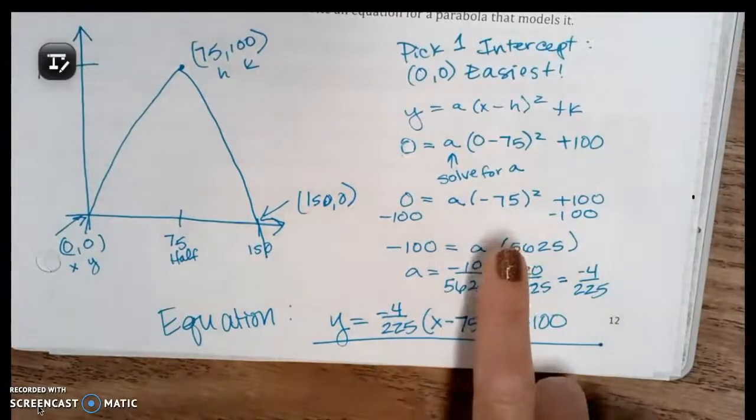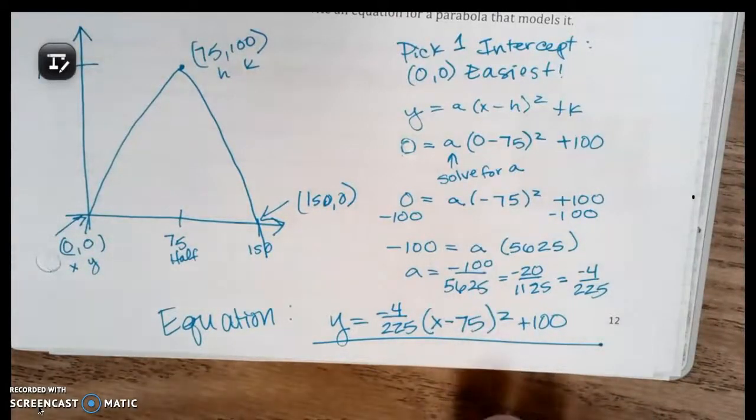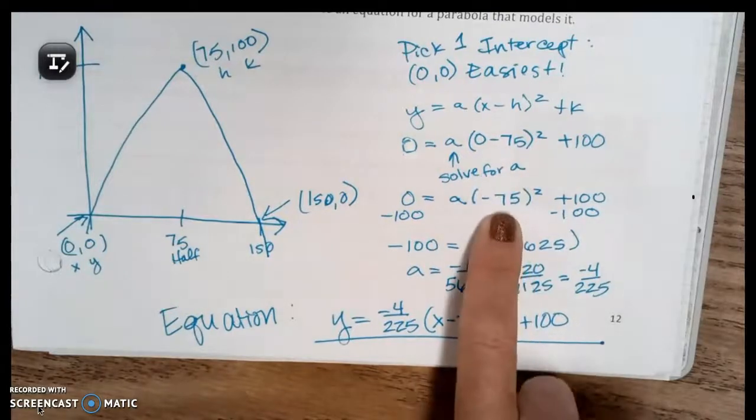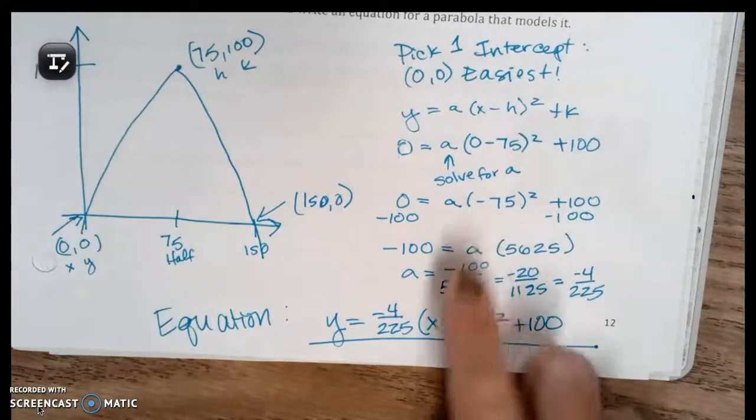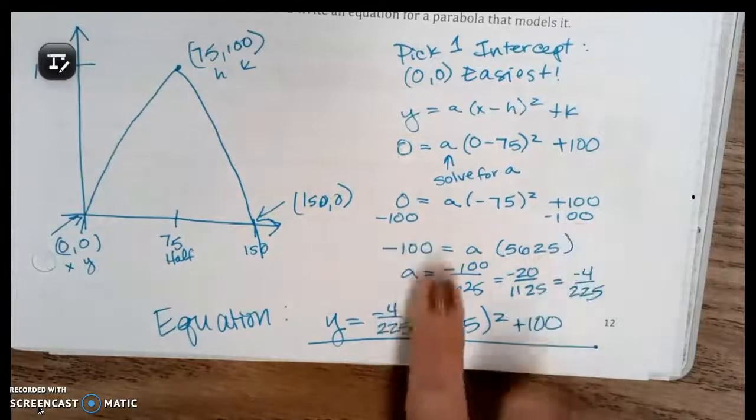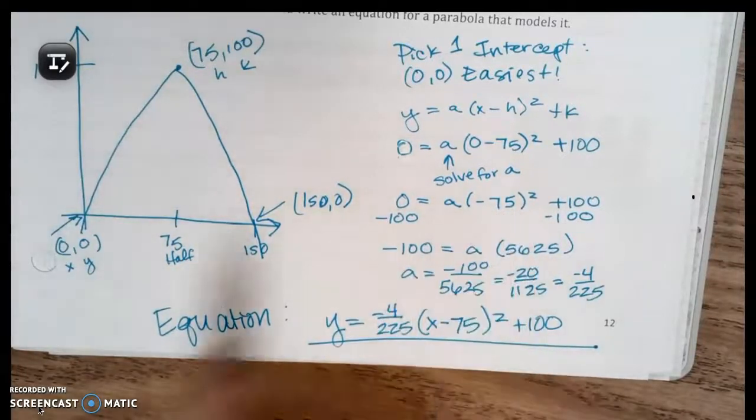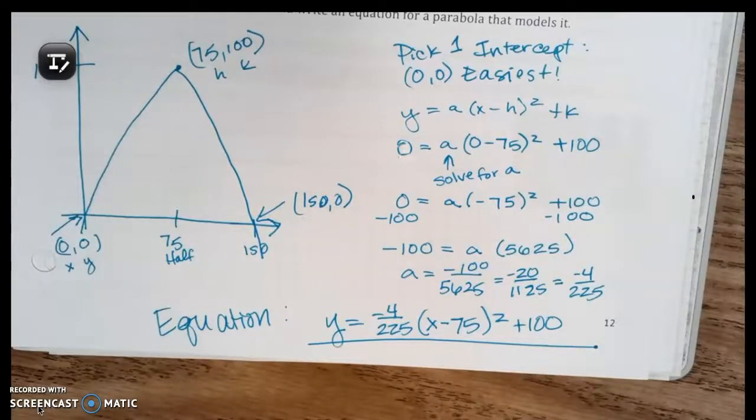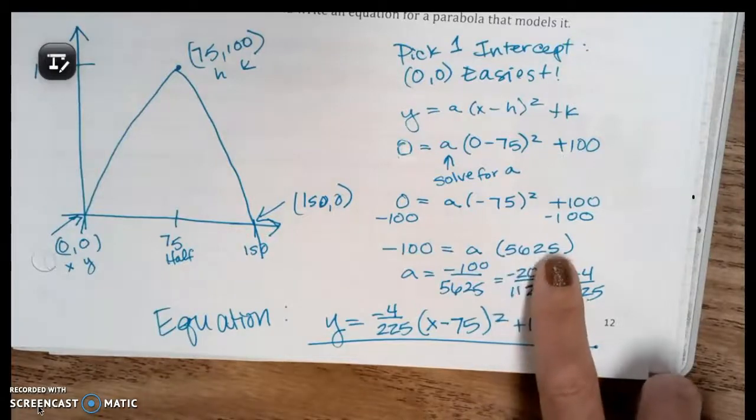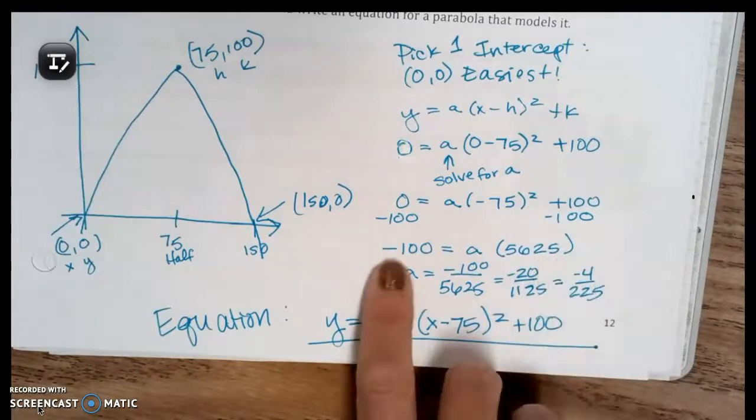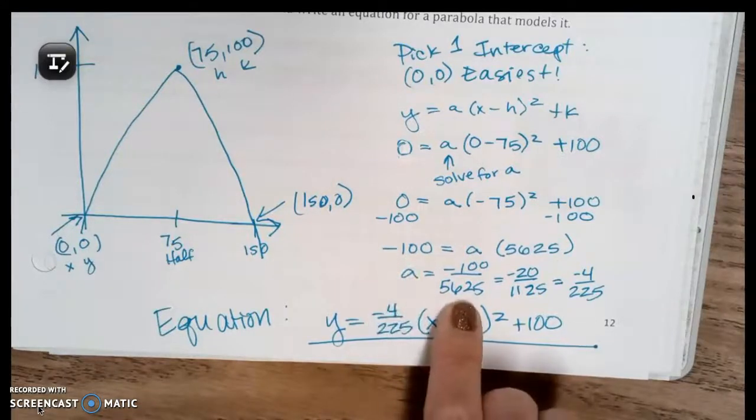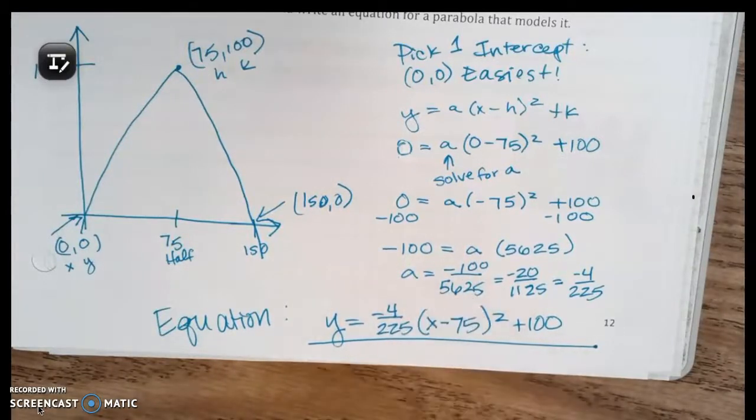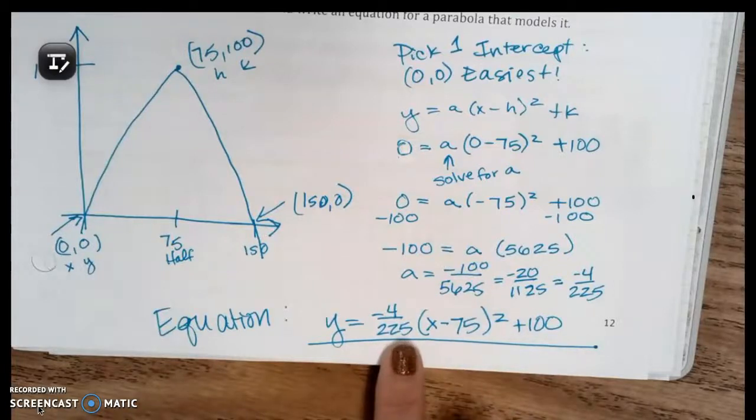All right, so we're going to simplify by using order of operations. 0 minus 75 is negative 75. Then we want to subtract 100 from both sides, and then you're going to square negative 75. I recommend doing that on your calculator, right? So you get 5625. Divide both sides by the 5625 and you get negative 100 over 5625.